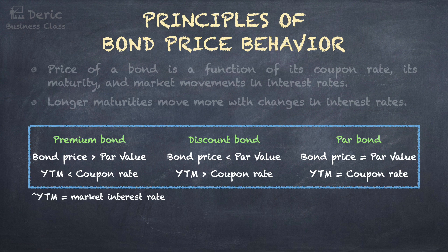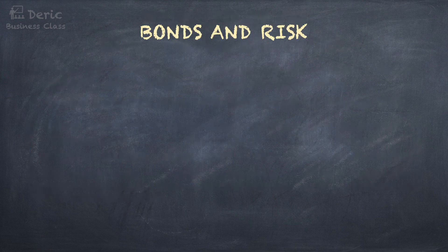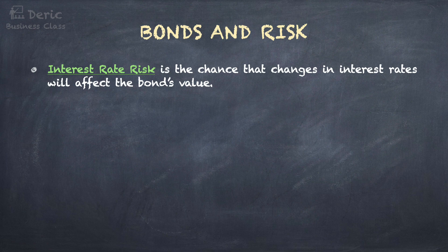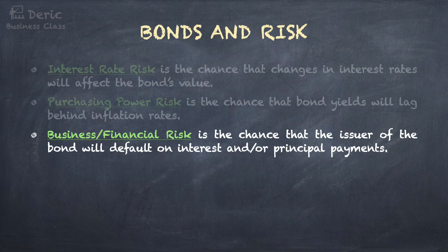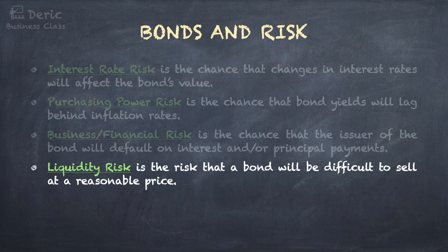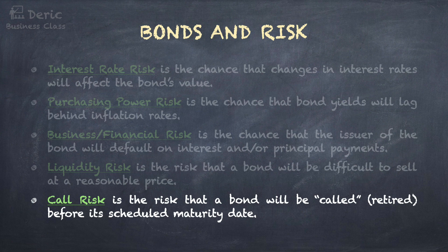There are some types of risk that come with bonds. Interest rate risk is the chance that changes in interest rates will affect the bond's value — higher interest rates will cause the bond's value to drop. Purchasing power risk is the chance that bond yields will lag behind inflation rates, meaning what you earn from the bond return is not sufficient to cover inflation. Business or financial risk is the chance that the issuer of the bond will default on interest and/or principal payments. Liquidity risk is the risk that a bond will be difficult to sell at a reasonable price. Call risk is the risk that a bond will be called or retired before its scheduled maturity date, meaning bondholders will no longer receive coupon interest from the company.